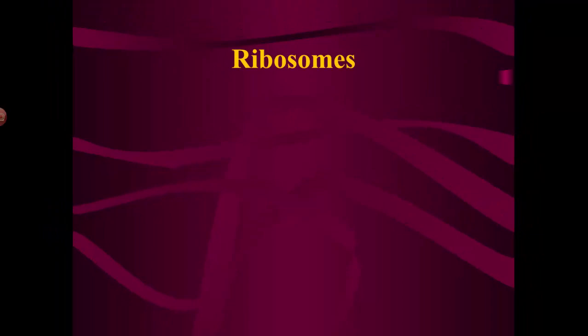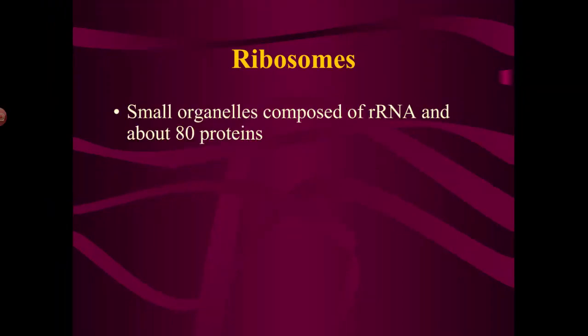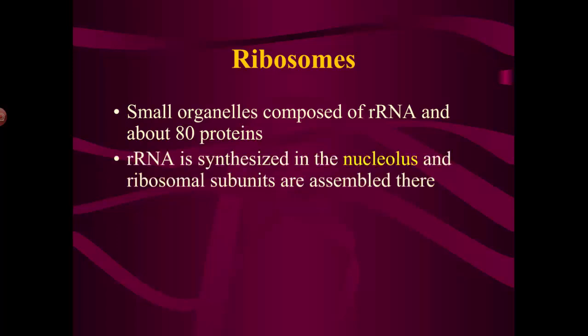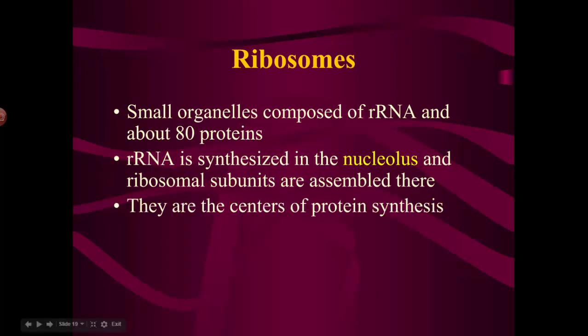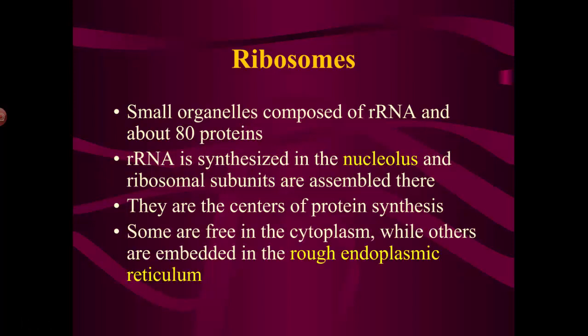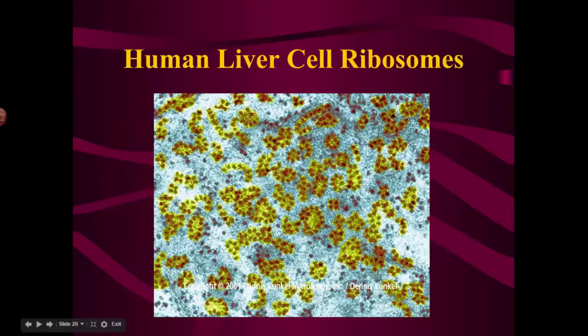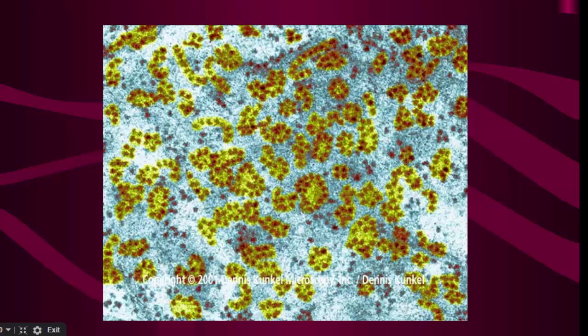The next organelle is ribosomes — we've studied these, so we'll quickly review. They're made of ribosomal RNA and about 80 different proteins holding things together. The ribosomal RNA is made in the nucleolus, which is in the middle of the nucleus where all the DNA is packed. The ribosomal subunits — there are two, a large and a small one — are assembled in the nucleolus and then come out into the cytoplasm. Ribosomes are where proteins are made. In prokaryotes they're free-floating in the cytoplasm, but in eukaryotes many ribosomes are stuck on the endoplasmic reticulum.